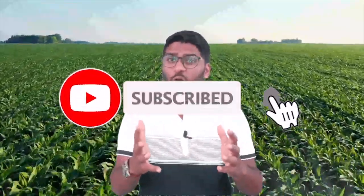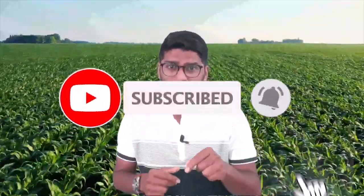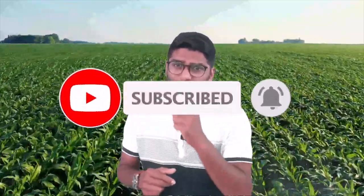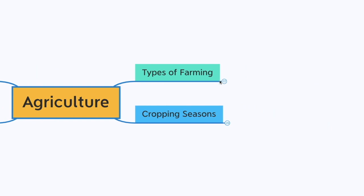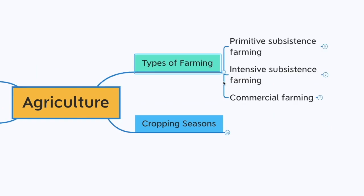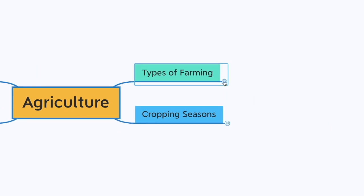In this chapter let's learn a little bit more about agriculture. If you have not already subscribed to this channel, do that, and let's get into this class. Let's talk about types of farming: first we have primitive subsistence farming, intensive subsistence farming, and commercial farming.